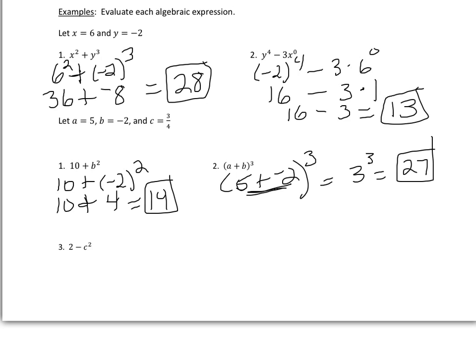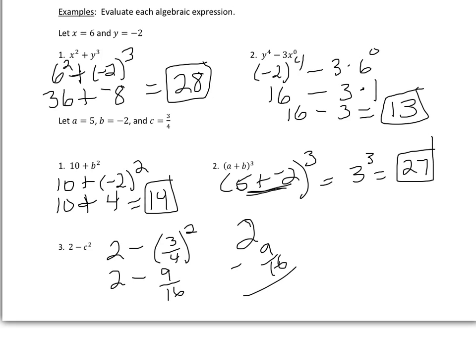For this last one, we have 2 minus c squared, or 2 minus 3/4 squared. That becomes 2 minus 3/4 times 3/4, which is 9/16. So we have 2 minus 9/16. We borrow from the whole number: 2 becomes 1 and 16/16, and 16/16 minus 9/16 is 7/16, giving a final answer of 1 and 7/16. You can now get started with the homework.